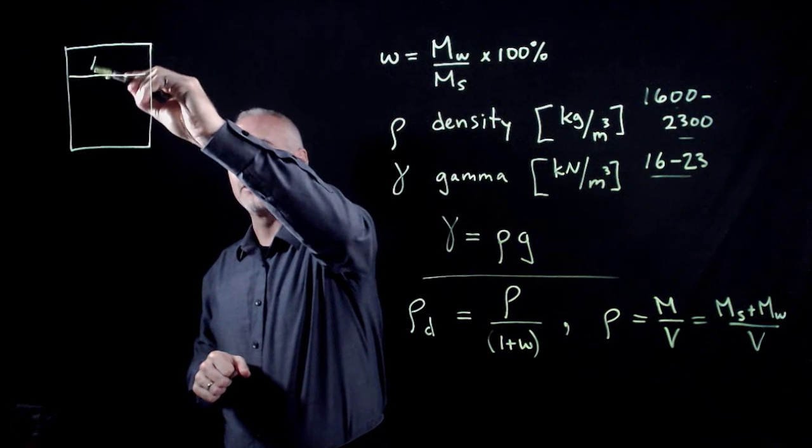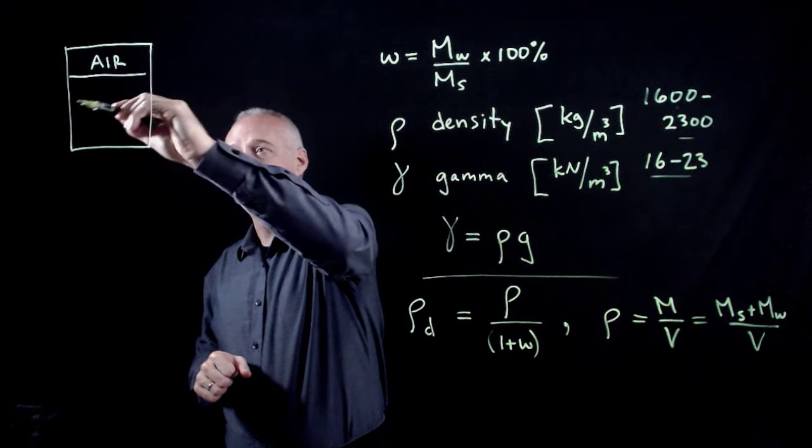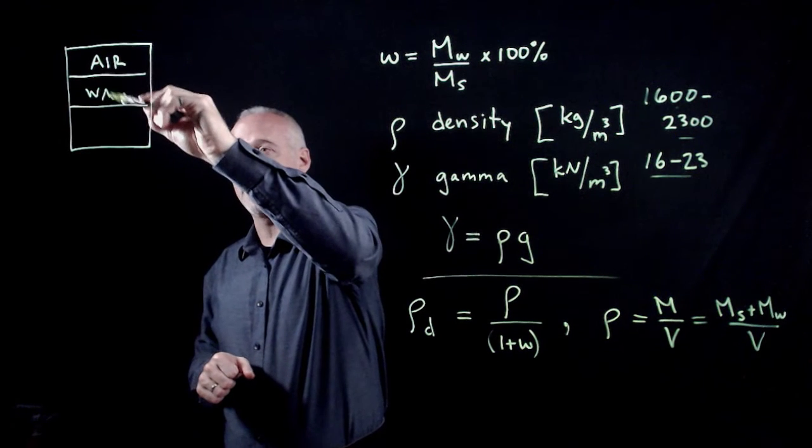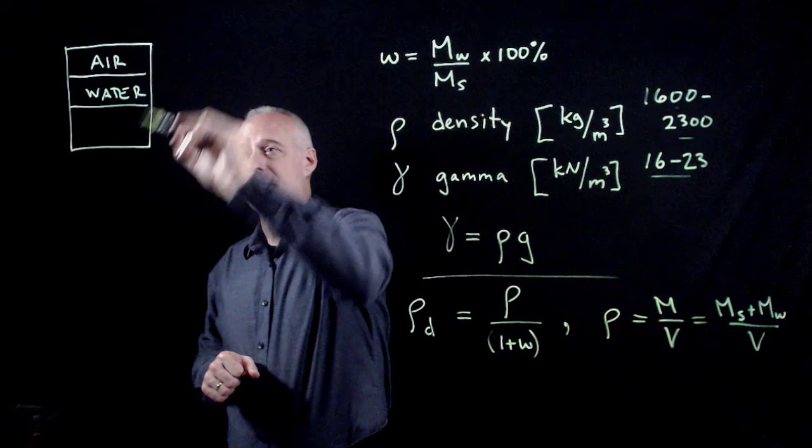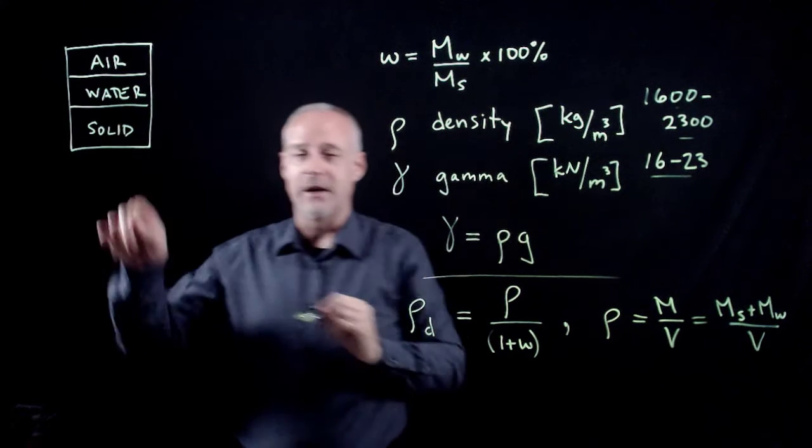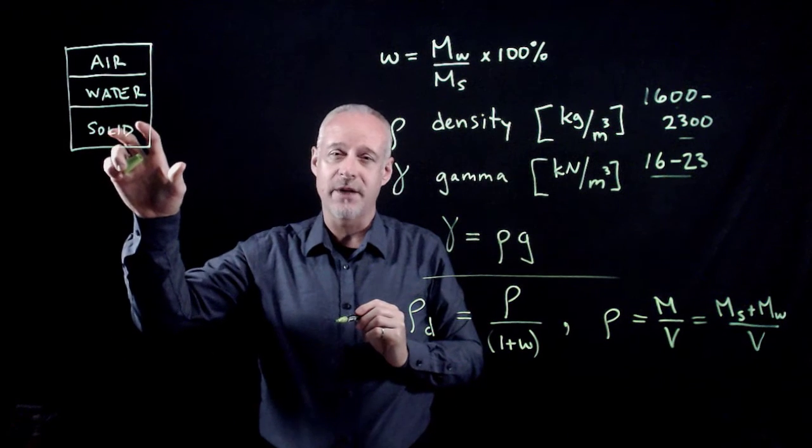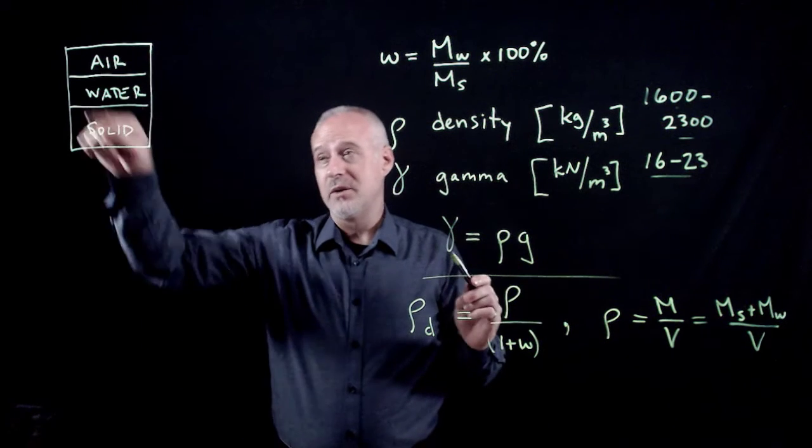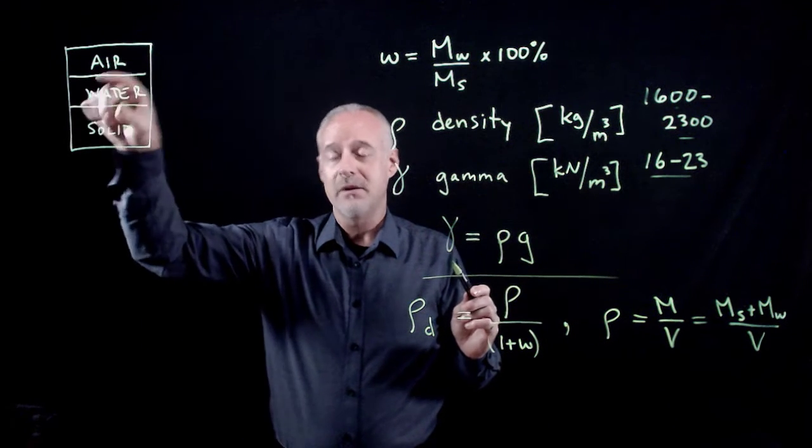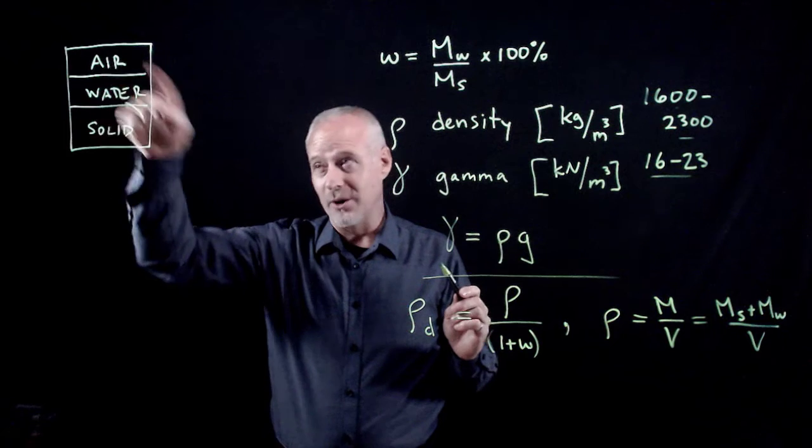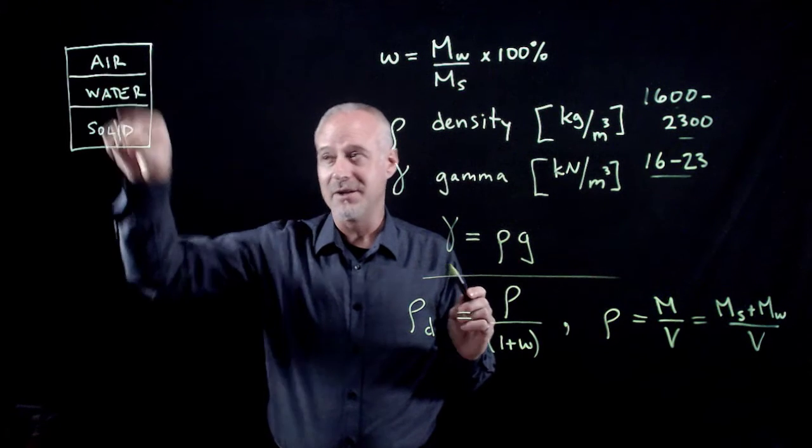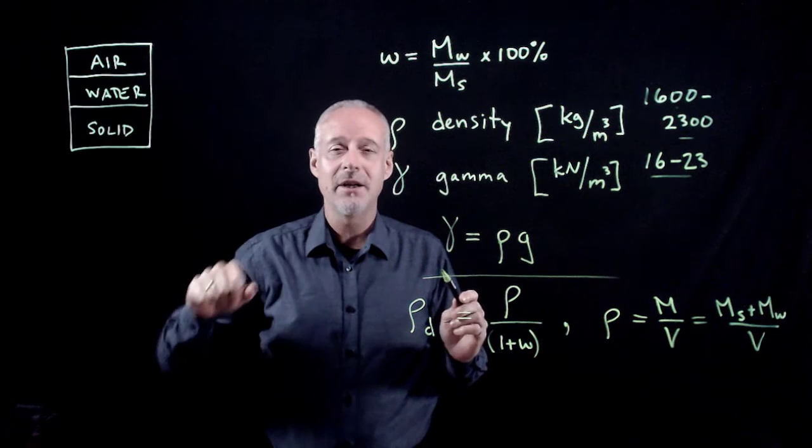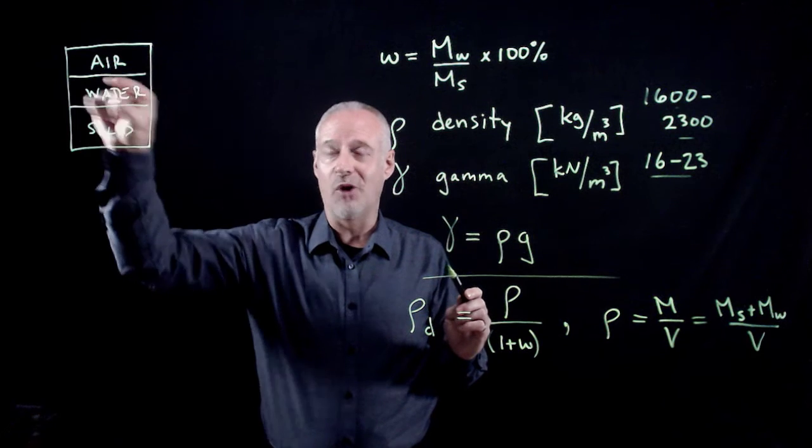If we idealize that soil sample and say, well, some portion of that soil is air, some portion of it is water, and some portion of it is solid, you may have seen this in your textbook or in a lecture. The density of this as a soil, this is all mixed together in the phase diagram. It's idealized in its specific volumes.